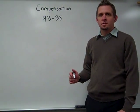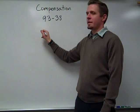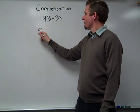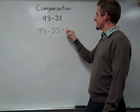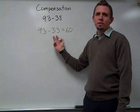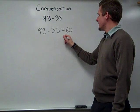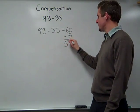So another way I might use compensation is to change the 38. So I might think of it this way. 93 minus 33, that gives me 60. Well, I need to take away 38, and I only took away 33, so I need to take away 5 more. So I need to take 5 more from the 60, which gives me my answer 55.